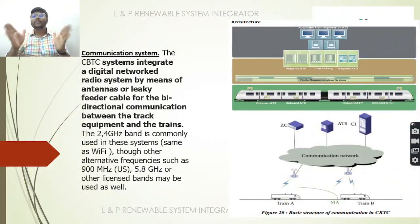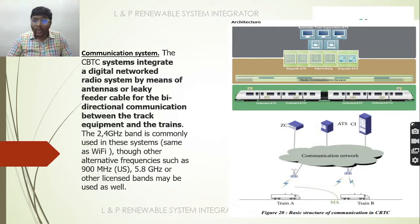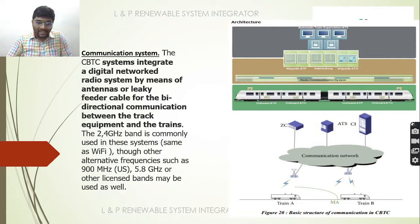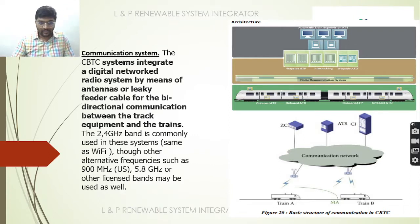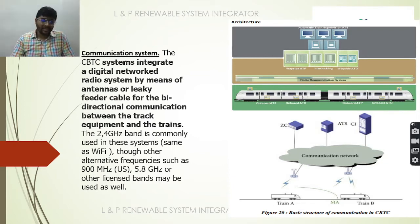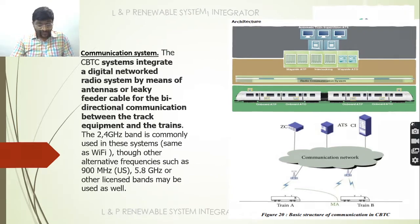Regarding the communication system: it integrates a digital network radio system by means of antennas or cables for direct communication between track equipment and trains. The frequency range varies — 2.4 GHz is common, but 900 MHz is also used in some places. Nowadays, Wi-Fi networks are also being used.